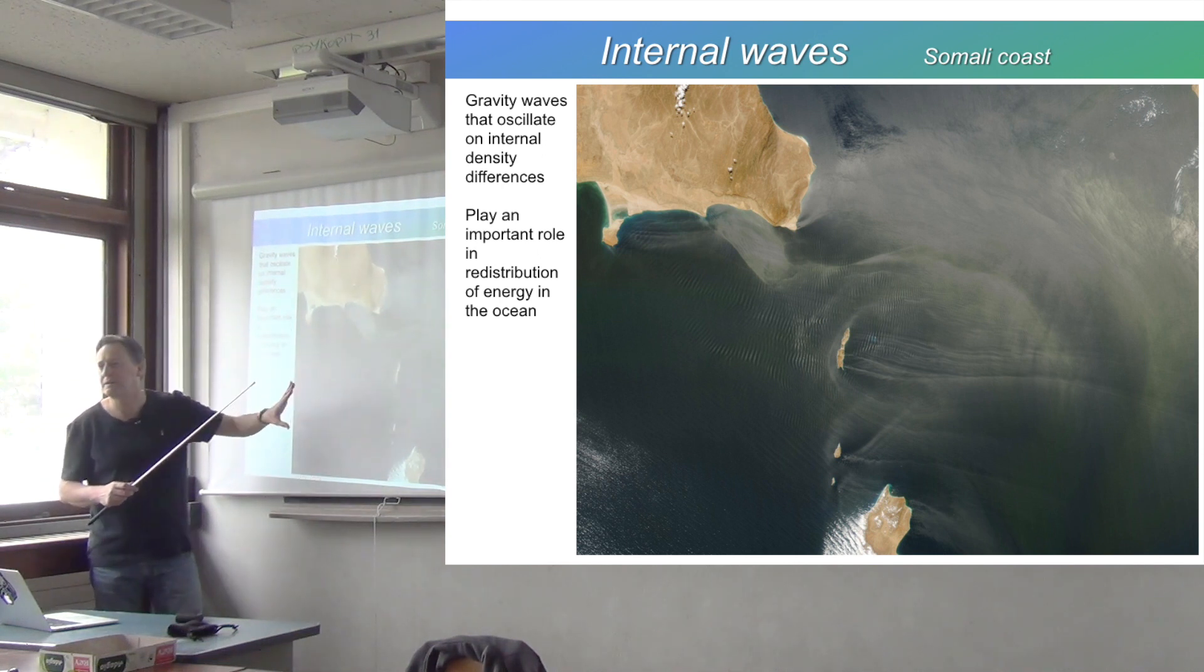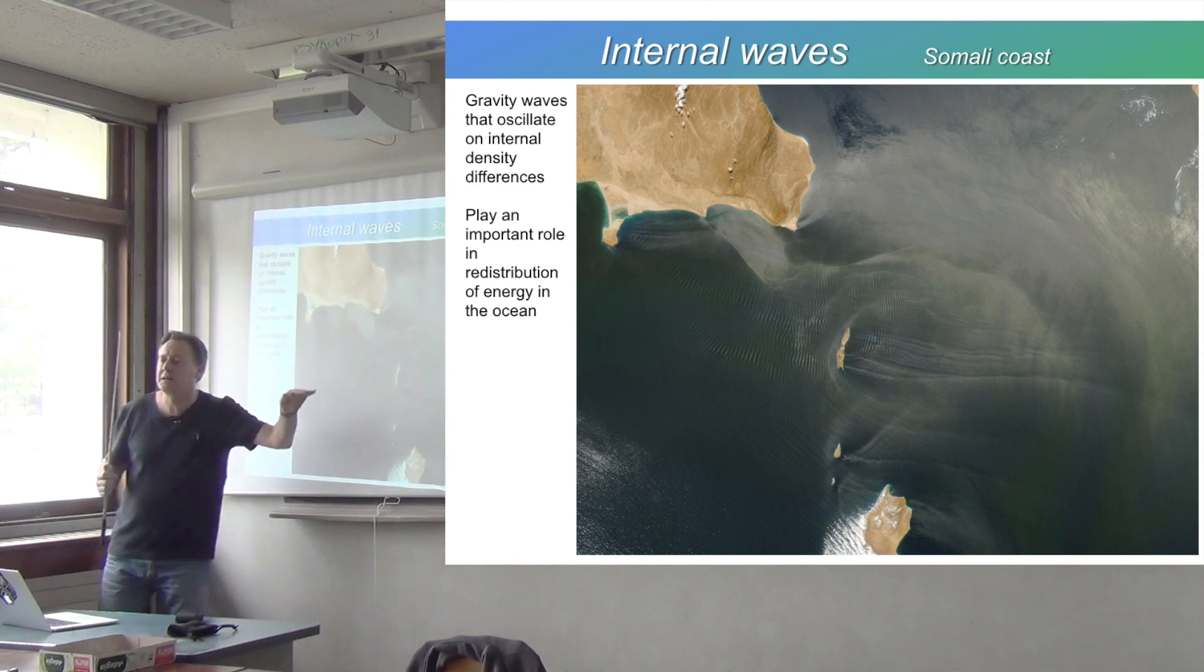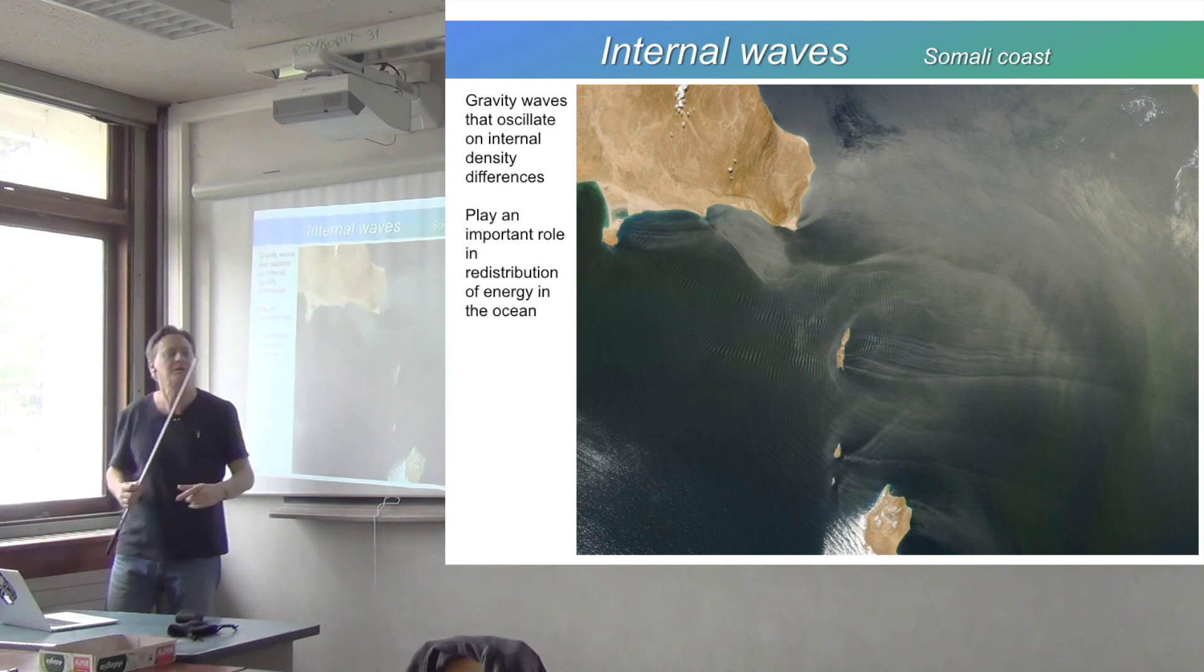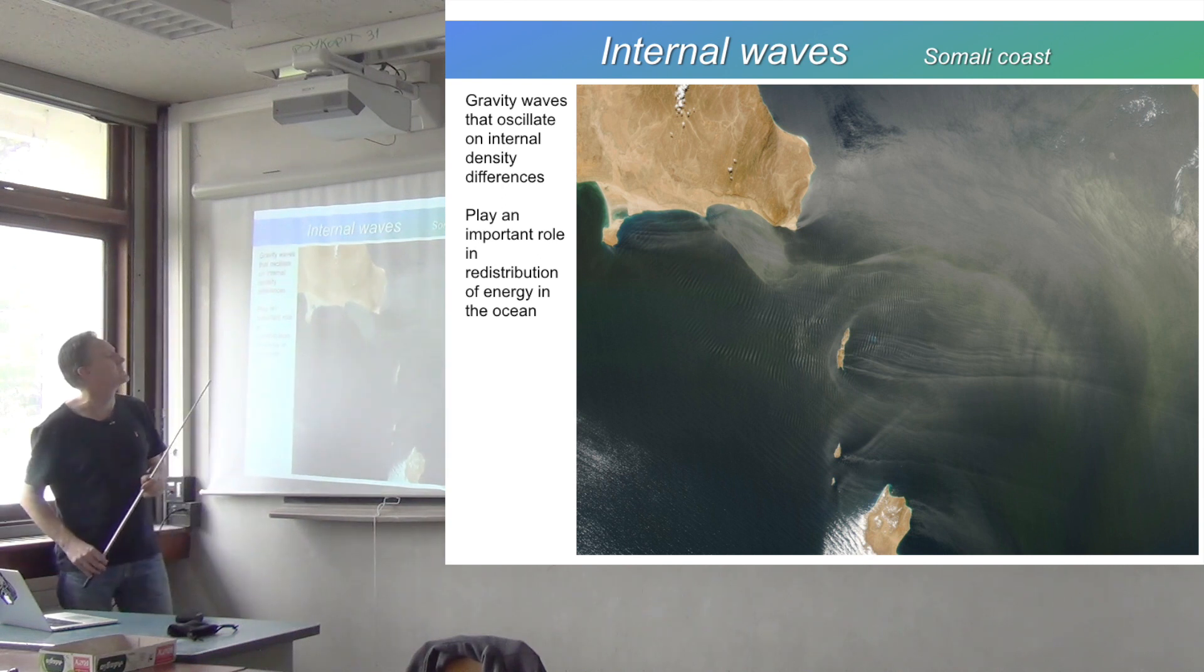So this fluid is stratified at a greater depth. And there's an internal wave, which, because that interface is going up and down internally, that will create pressure differences at the surface, which will create a slight signature of that at the surface. So that's why it's visible at the surface.